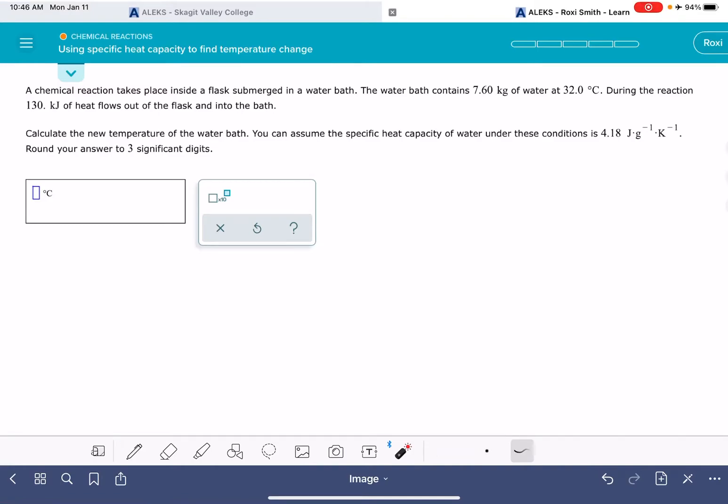In this video, I'm going to walk you through solving the Alex problem using specific heat capacity to find temperature change. In this particular problem, we have a scenario where there's a chemical reaction that's taking place in a flask that is submerged in a water bath. Let's just draw a picture of what that would look like.